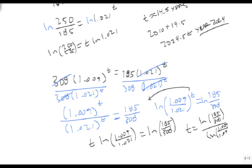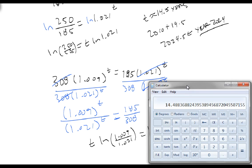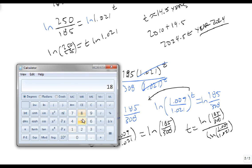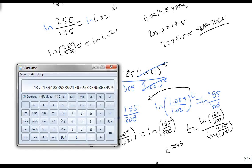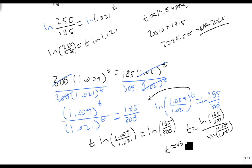We type that into our calculator: 185 divided by 308, natural log, divided by 1.009 divided by 1.021, natural log, equals 43 years. T is approximately equal to 43. We'll just leave it at 43, add 2010 to that, and this will happen in the year 2053. If the growth rates remain what they are now, Pakistan will have the same population as the United States in 2053.